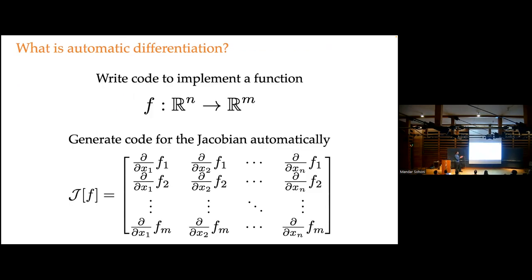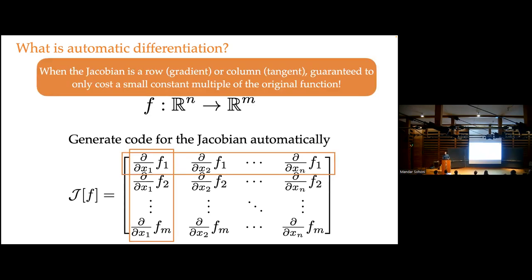What I want to do now is explain what automatic differentiation is. Fundamentally it's a system where you write code to implement some function and you get the Jacobian of that function with no additional work. What makes it really amazing is that when you only care about a row or column of the Jacobian — a gradient or a tangent — you can provably compute that quantity in a small constant multiple of the cost of computing the original function. That small constant is like four. Interestingly cheap gradients.